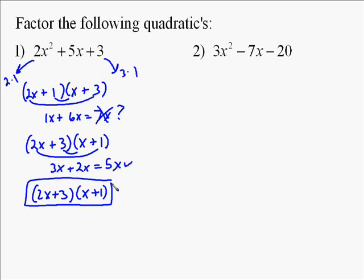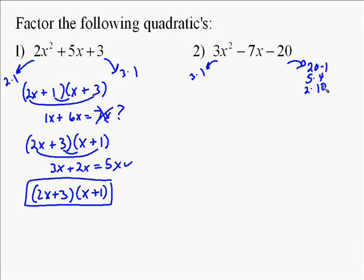The second problem: 3x squared is the first thing we need to find. Again, even though it's not quite as easy, we still know it has to be 3x times x. And then we've got to consider factor pairs for 20: 20 times 1, 5 times 4, and 2 times 10. So we're going to start with 3x times x.